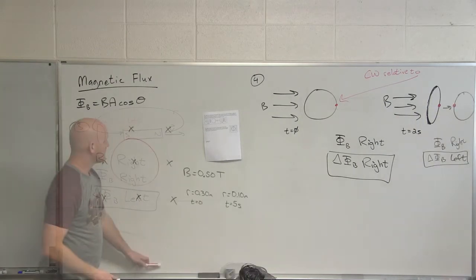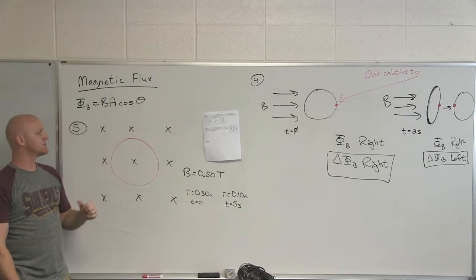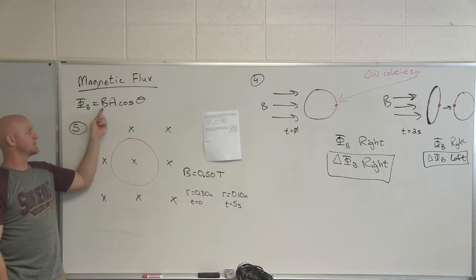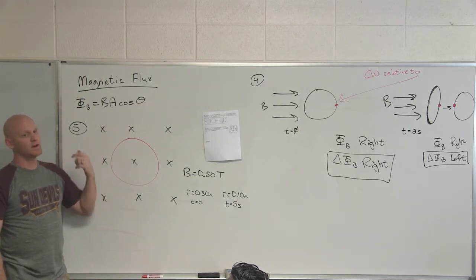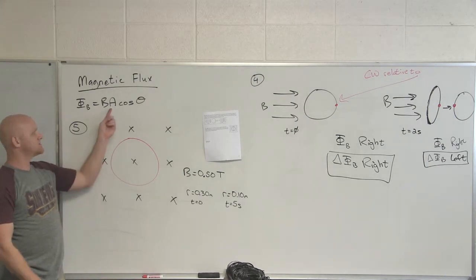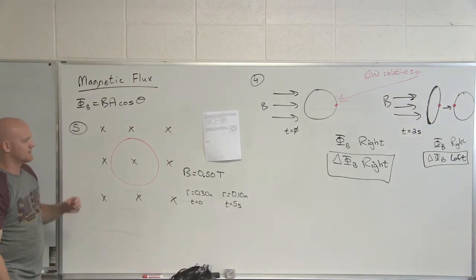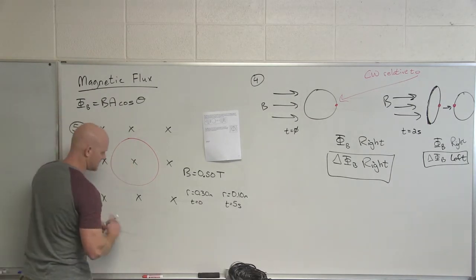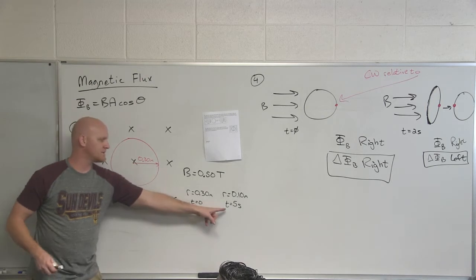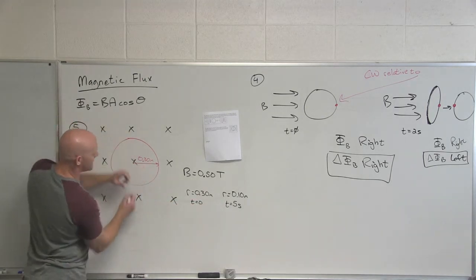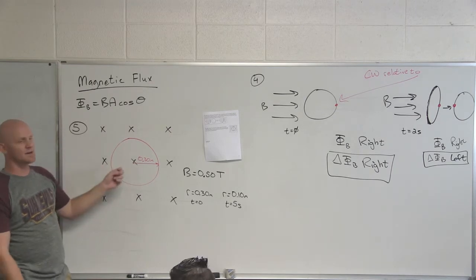We need the magnetic flux to change in order to induce an EMF and a current in a closed loop. We've looked at examples where we change the strength of the magnetic field by moving a bar magnet closer or further from a loop, and changing angle θ by rotating the loop in a constant magnetic field. The only thing we haven't looked at yet is changing the area of the loop. This loop can actually be constricted to make it smaller.